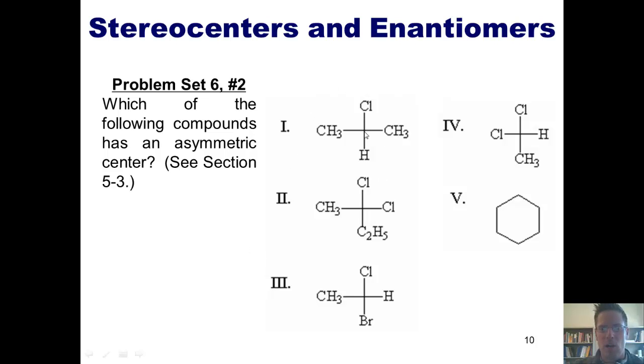In example one, I've got a carbon atom that's stuck to a chlorine, a methyl, a methyl, and a hydrogen. Is that a carbon atom stuck to four different things? Well, obviously not. So this molecule does not have an asymmetric or chiral center.